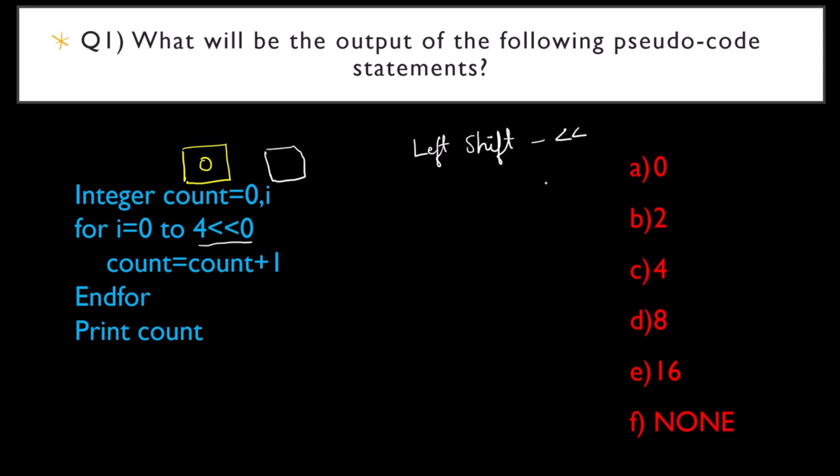This less than less than symbol is called the left shift operator. Now what does this left shift operator do? Let me give you an example. Suppose I have the number 7. How do I represent 7 in binary? In binary, if I start 1, 2, 4, 8, my 7 will become 1, 1, 1 - that is 4 plus 2 plus 1 equals 7. This is 7 in binary. This is the 16th place, 32nd place, 64th place.